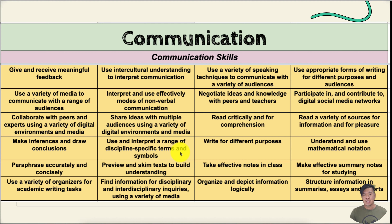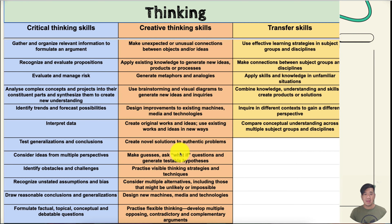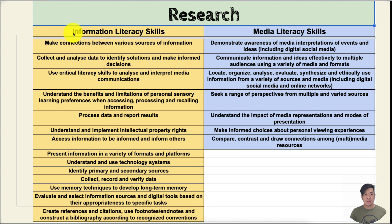Here are examples of evidence you can work on for specific ATL skills. Communication — you can pause while going through the video. Social skills involve collaboration and working with one another. Thinking skills have three strands: critical thinking, creative thinking, and transfer skills — most students have some difficulty with transfer skills. Self-management includes organizational skills, effective skills, and reflective skills. Research includes information literacy skills and media literacy skills, which are most common among my students.